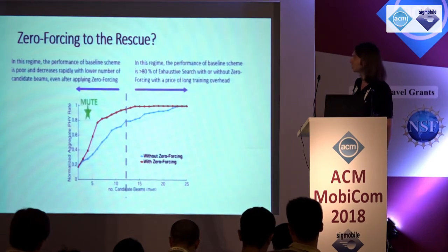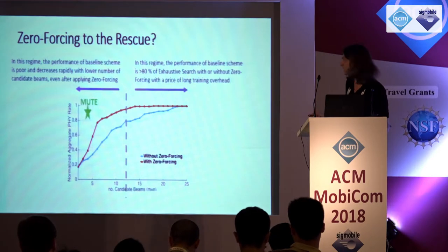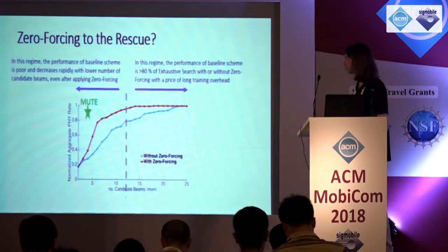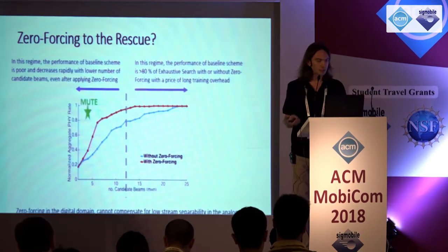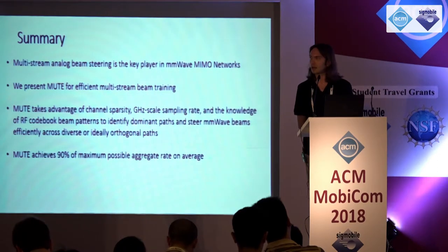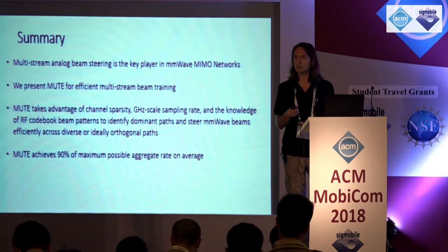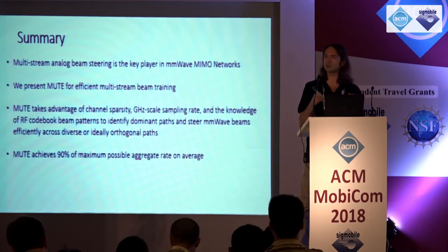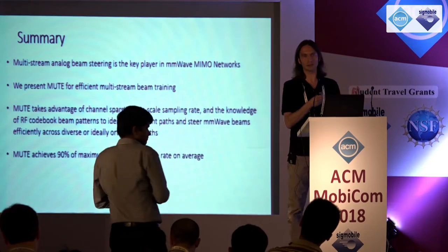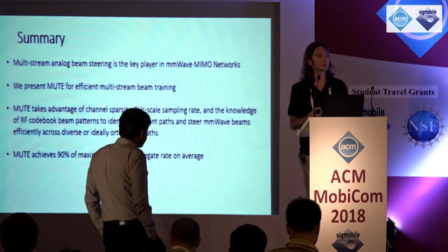For comparison, MUTE uses an average of only four beams and gives 90% of the maximum possible performance. Without zero-forcing, you would need 16 beams on each side — 16 to the power of four combinations — to achieve similar performance. With zero-forcing, you can drop this to 10 beams, still much more than four. The conclusion is that zero-forcing can help but cannot fully compensate for a poor selection of analog beams. Multi-stream analog beam steering is the key player, and MUTE achieves on average 90% of the maximum possible aggregate rate.